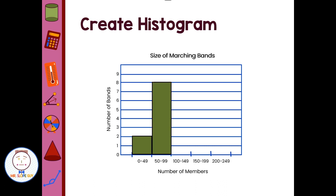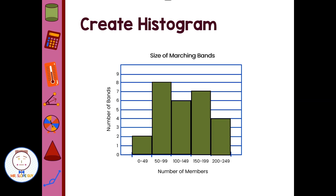From 50 to 99, we have eight bands from 50 to 99 members. Then we did the 100 to 149, we counted six bands. 150 to 199, we counted seven bands. And from 200 to 249, we counted four bands.